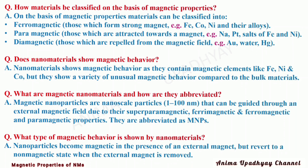Do nanomaterials show magnetic behavior? Yes, nanomaterials show magnetic behavior as they contain magnetic elements like iron, nickel, and cobalt. But they show a variety of unusual magnetic behavior compared to their bulk counterparts. Magnetic nanomaterials are nanoscale particles within the range of 1 to 100 nanometers that can be guided through an external magnetic field due to their superparamagnetic, ferromagnetic, as well as paramagnetic properties.